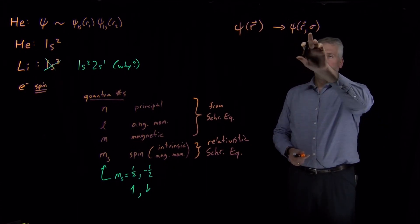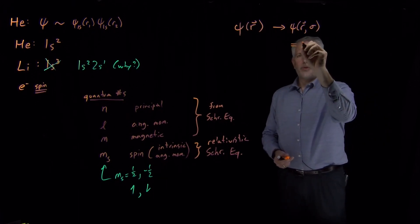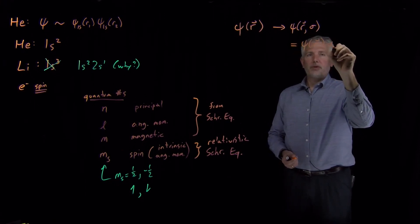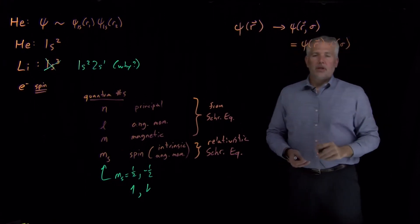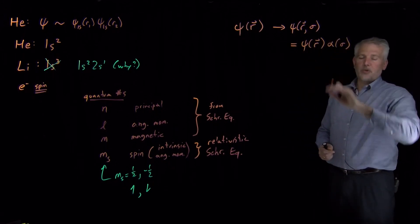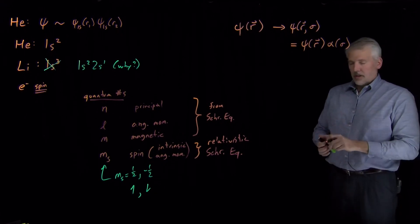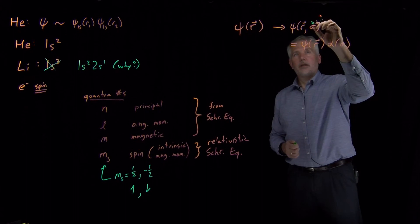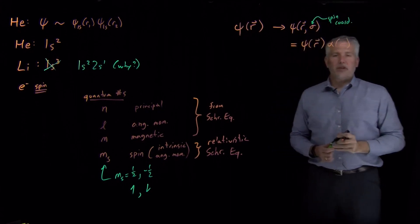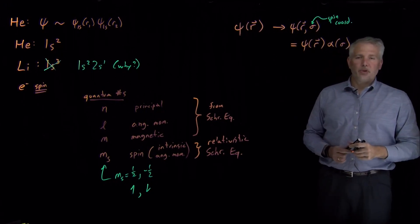If we're writing down a full spin wave function, we need to consider both the x, y, z coordinate as well as the spin coordinate. We won't do that too often, but when we do, we'll typically break that into a product of one term that describes the spatial dependence of the wave function, and a second term which describes the spin coordinates of the wave function. So σ here is the spin coordinate, and α is the spin portion of the wave function itself.